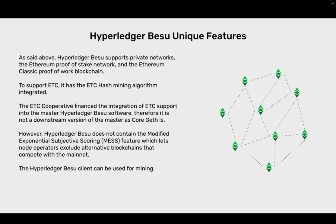Hyperledger Bezu unique features: Hyperledger Bezu supports private networks, the Ethereum Proof of Stake network and the Ethereum Classic Proof of Work blockchain. To support ETC, it has the ETCHash mining algorithm integrated. The ETC Cooperative financed the integration of ETC support into the master Hyperledger Bezu software. Therefore, it is not a downstream version of the master as CoreGeth is. However, Hyperledger Bezu does not contain the modified exponential subjective scoring (MESS) feature, which lets node operators exclude alternative blockchains that compete with the mainnet.